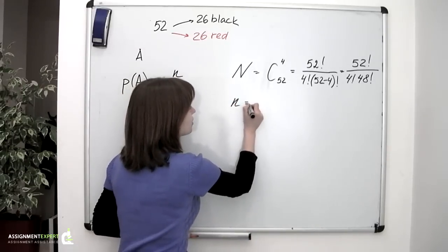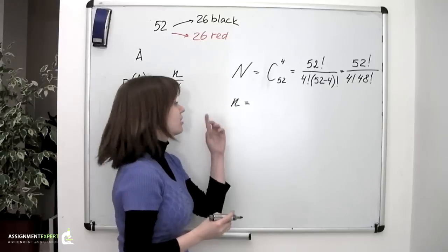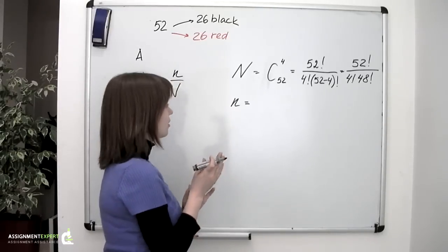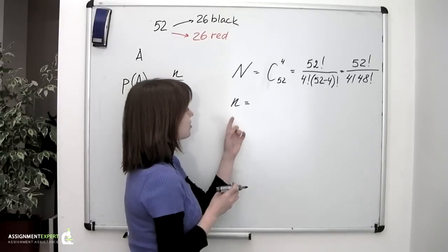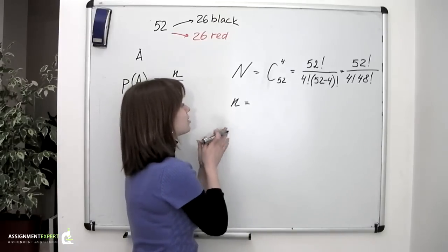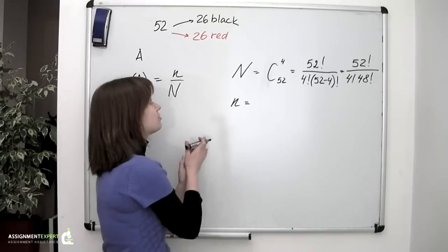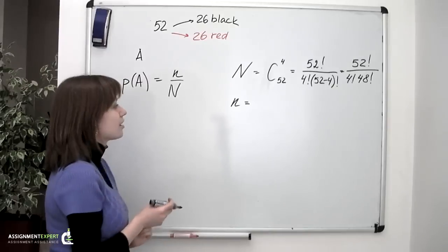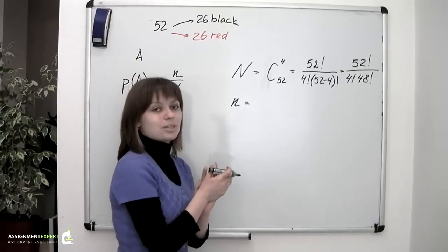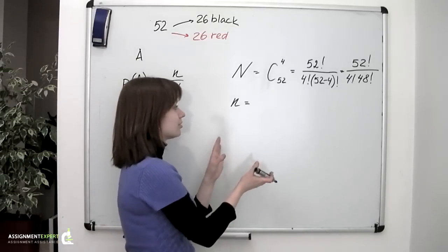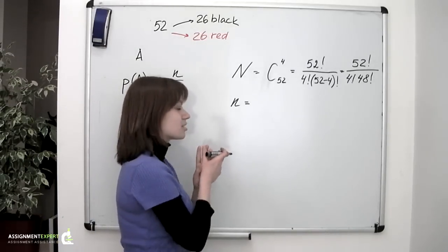Now, the small n is the number of favorable choices, or the number of ways in which we will pick exactly one black card and exactly three red cards out of these 52. And actually, this event can be divided into two sub-events which are independent.